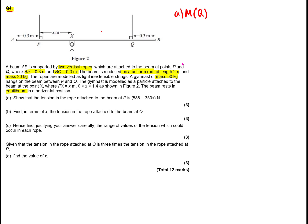Let's have a look at this exam question. I've highlighted the keywords in yellow. You've got two vertical ropes modelled as strings, so there's going to be a tension — I'm going to label that tension Q and tension P. Labelling this correctly is key to getting your three out of three marks. AP equals 0.3 is given in the diagram. You've got a uniform rod of length 2m and mass 20, so the centre of mass is going to be 20g going down.